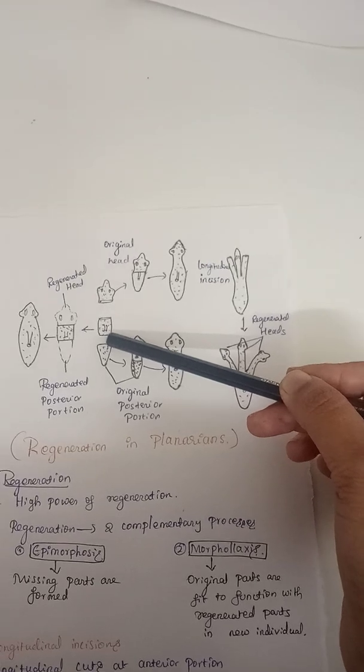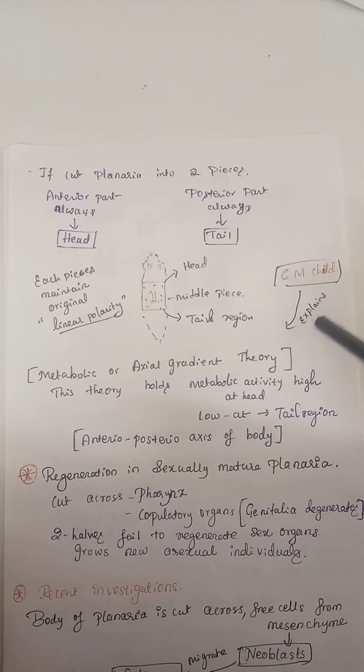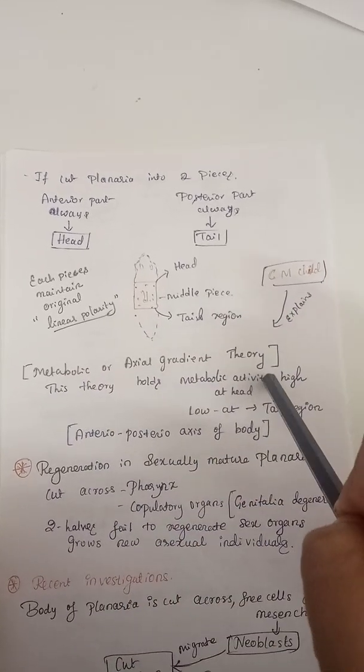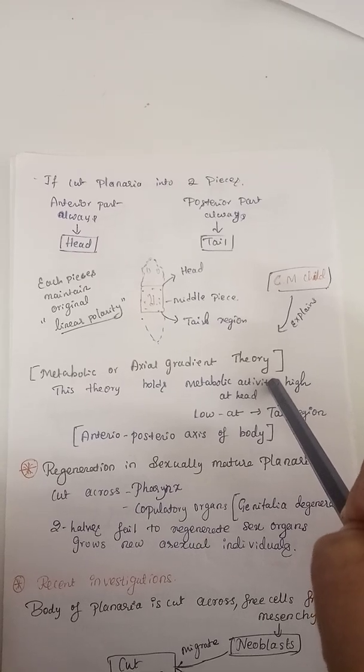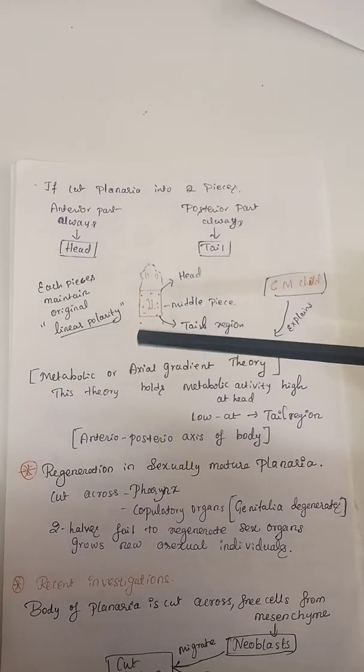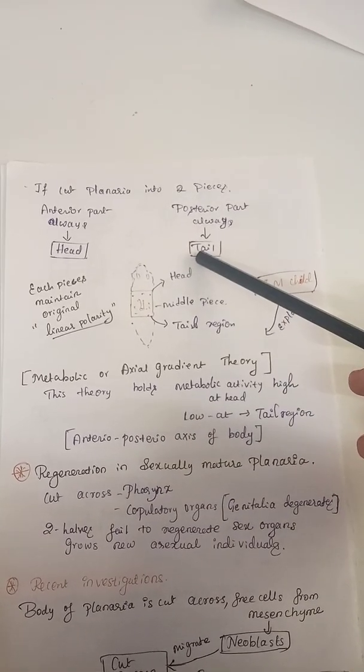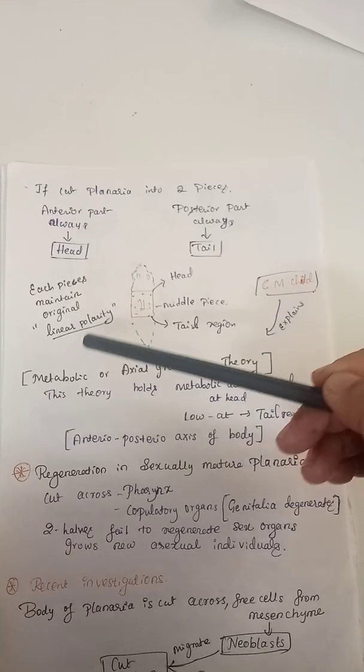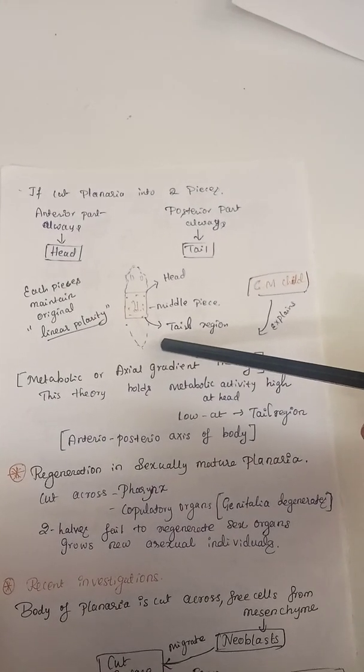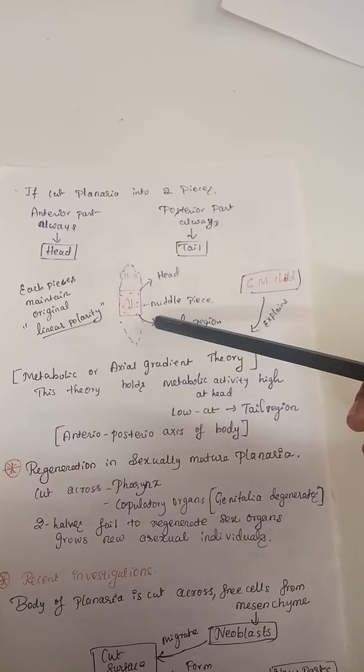This theory was explained by CM Child through metabolic or axial gradient theory. In this theory, he explained that each part of the planaria—anterior region and posterior region—maintains the original linear polarity. The anterior region has high metabolic activity, hence it gives rise to the head, and the posterior region has low metabolic activity, giving rise to the tail through the anterior-posterior axis of the body.